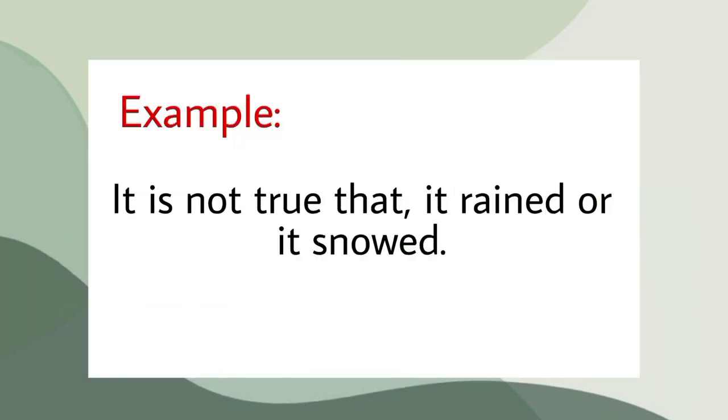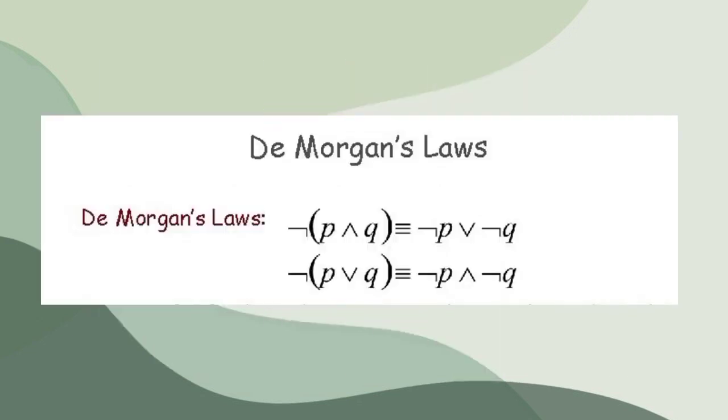So now let's have an example for DeMorgan's Law. So here's my example. It is not true that it rains or it snows. So as you can see, we have DeMorgan's Law. This is very useful for logical reasoning and manipulating logical statements.